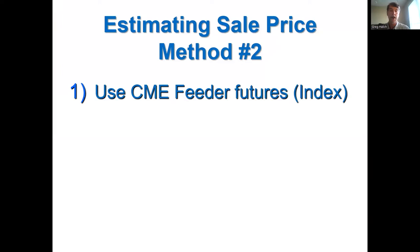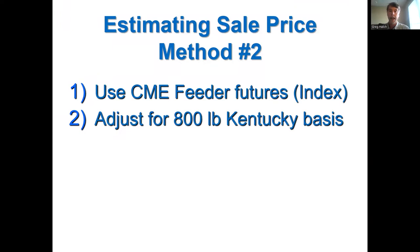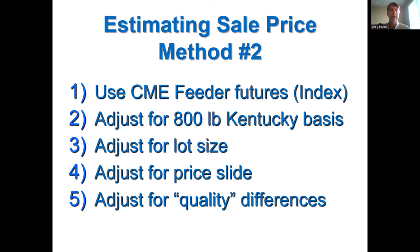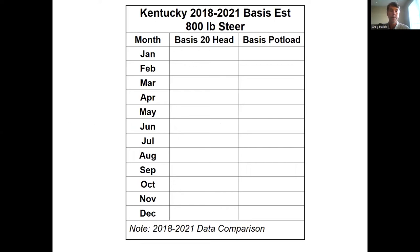Basically, it's a five-step process. First, just like what Kenny started out, you're going to use the CME feeder cattle futures or indexes. We're going to adjust that futures price to Kentucky based on a Kentucky basis for what that 800-pound steer would be worth here in Kentucky. We're going to adjust for lot size, adjust for the price slide — in other words, if instead of an 800-pound steer you have 850 or 750. And finally, you'll adjust for quality differences based on the history of your cattle and how they sell.